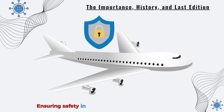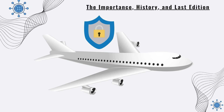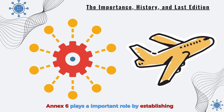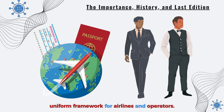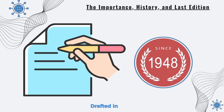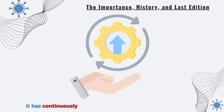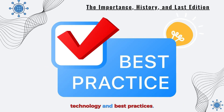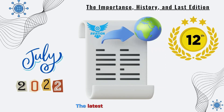Ensuring safety in international air travel is paramount. Annex 6 plays an important role by establishing a uniform framework for airlines and operators. Drafted in 1948, it has continuously evolved to reflect advancements in aviation technology and best practices. The latest edition, the 12th, was published in July 2022.